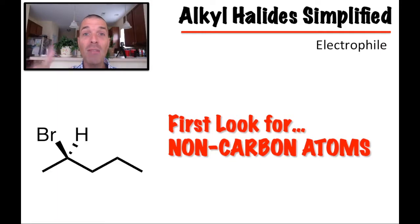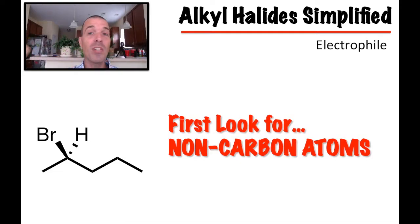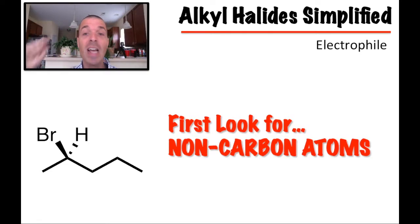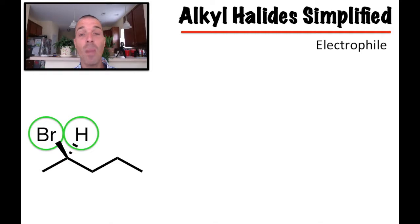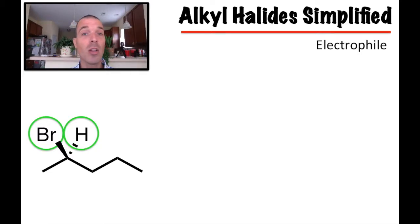The first thing I want you doing when assigning priorities for R and S is look for the non-carbon atoms — those are the easiest ones to see. Non-carbon means it doesn't have the letter C. We're not looking at the carbon chain; we're looking for things like halogens like bromine, chlorine, fluorine, or oxygen, or nitrogen, or hydrogen. Those are the atoms you're looking for. In our case, the two non-carbons I see are the Br and the H.